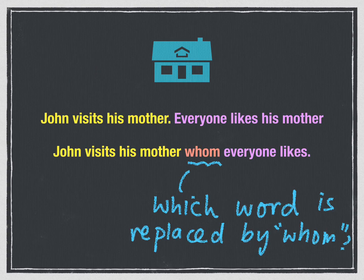Remember, for a relative clause, we're combining two sentences into one with a WH word, and that forms the relative clause. In this example, we see two sentences: the first one — John visits his mother; and the second — everyone likes his mother. To combine these two sentences, we make it: John visits his mother whom everyone likes.